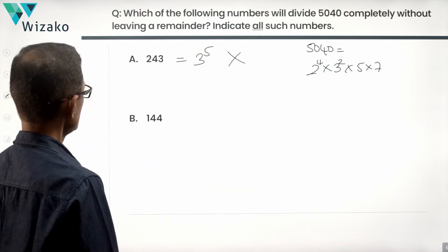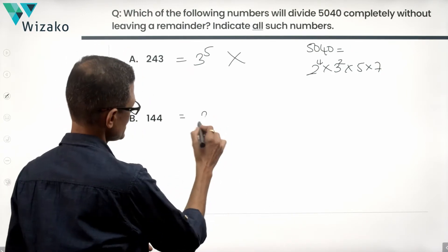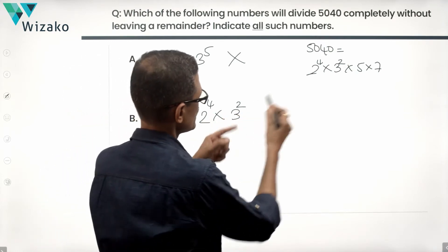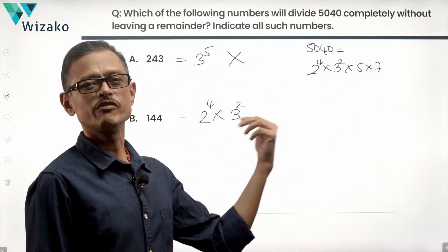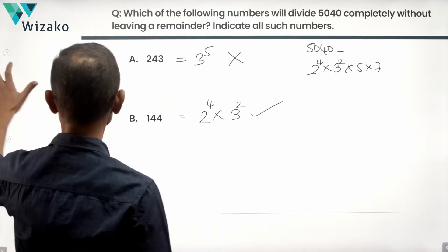Small answer option 2. 144. 144 is 16 times 9. That's something known to us. 16 is 2 raised to the power of 4 and 9 is 3 square. 2 power 4 and 3 square are certainly contained or found in 5040. So 5040 will be divisible by 144. Good. B is one of the answer options.